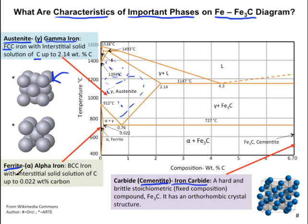The next important phase is ferrite, also known as alpha or alpha iron. It is body-centered cubic iron with an interstitial solid solution of carbon up to 0.022 weight percent carbon. It is found in a specific part of the phase diagram and is also solid.